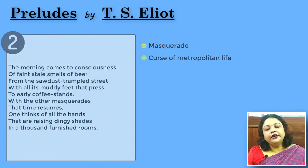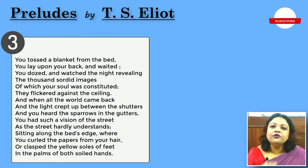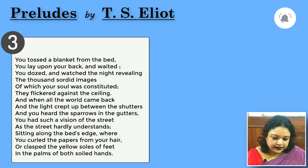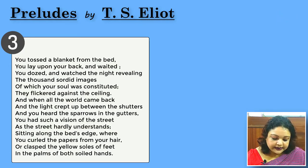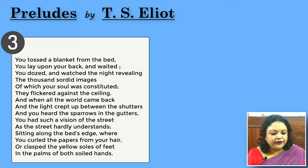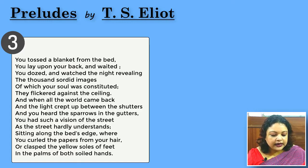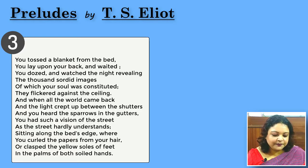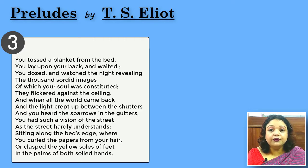The third part of Preludes is perhaps the most ingenious one. 'You tossed a blanket from the bed. You lay upon your back and waited. You dozed and watched the night, revealing the thousand sordid images of which your soul was constituted. They flickered against the ceiling. And when all the world came back and the light crept up between the shutters and you heard the sparrows in the gutters, you had such a vision of the street as the street hardly understands. Sitting along the bed's edge, where you curl the papers from your hair, or clasp the yellow soles of feet in the palms of both soiled hands.'